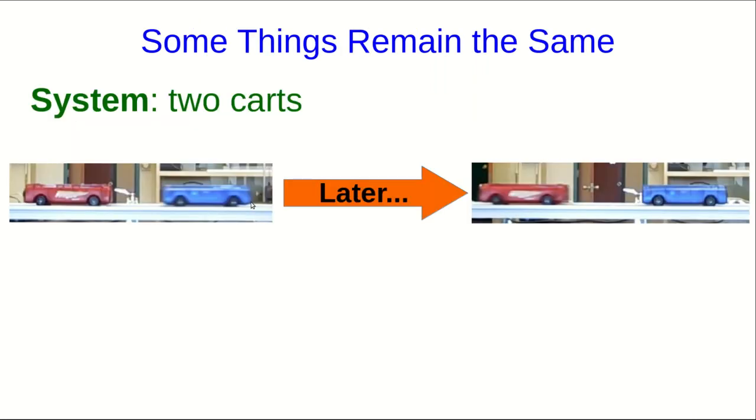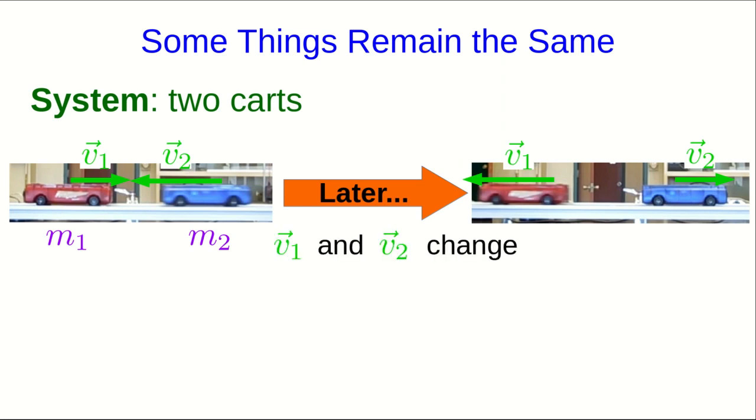So frequently we want to understand and be able to predict changes. For example, when two carts collide, they each have a mass and they each have a velocity, and their velocities change during the collision. If we want to predict those changes, it's often very useful to know that there's a funny quantity called the momentum which doesn't change.